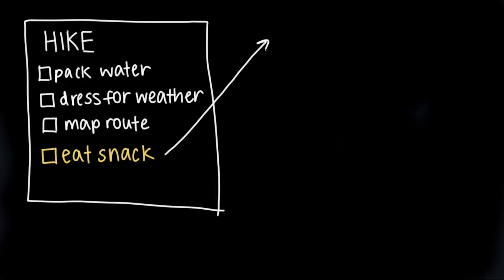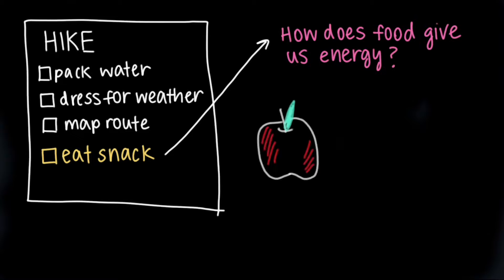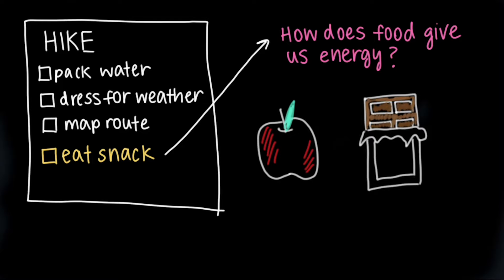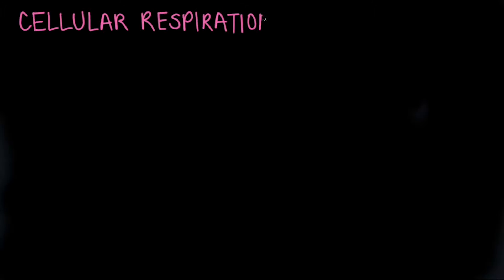We as humans need food to nourish our bodies, but how exactly does that food give us energy? How does something like an apple or a piece of chocolate get converted into something our bodies can use? The answer to this question can be found in a process called cellular respiration, which is how organisms get their energy from food.